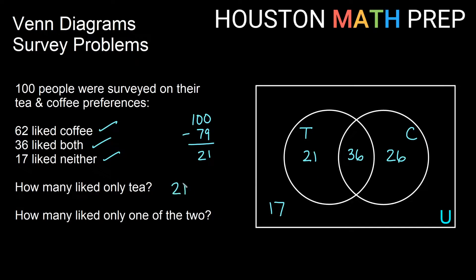But we now know that 21 people liked only tea and not anything else. Our last question, how many liked only one of the two? So that is actually this number. These people liked only one of the two, and also these people only liked one of the two. The 36 people in the middle liked both, so they didn't like just one. The 17 people out there liked neither. So the 21 and the 26, we add those together, and we'll get that 47 people liked only one of the two.